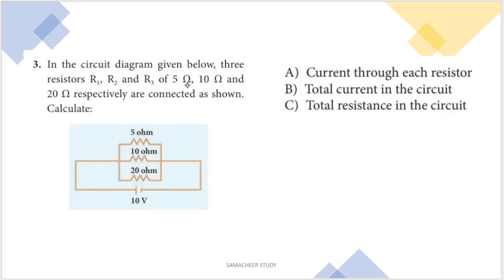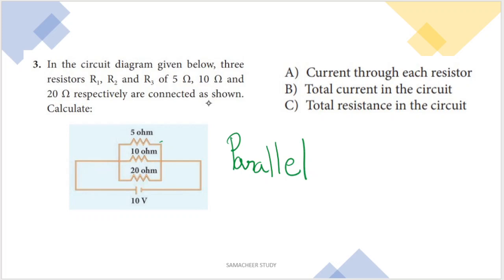Next problem: in the circuit diagram given, three resistors R1, R2, R3 of 5 ohms, 10 ohms, and 20 ohms respectively are connected. Looking at the connection, we identify it as a parallel circuit. In a parallel connection, we identify it first and then answer the questions.